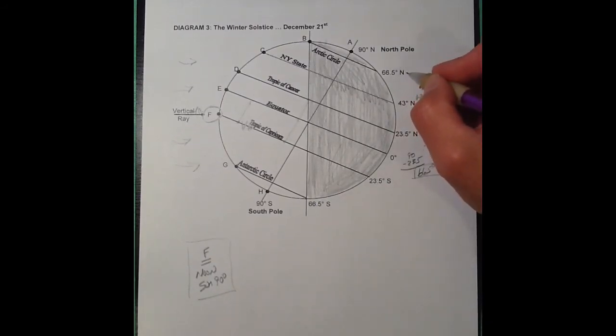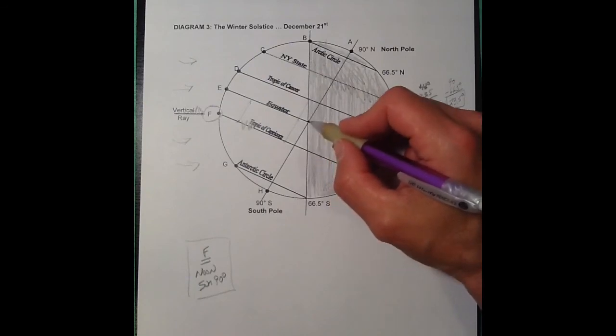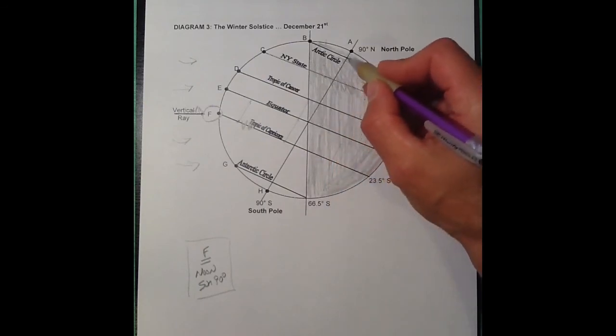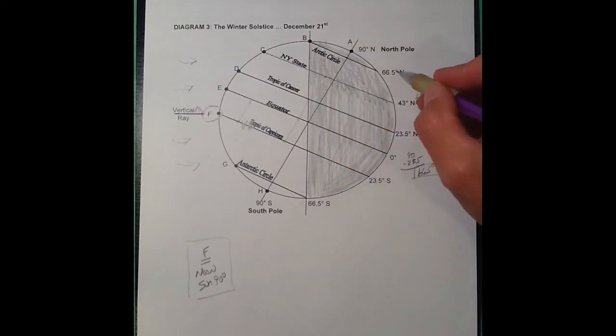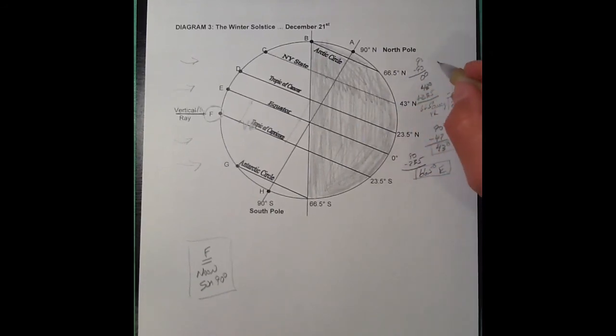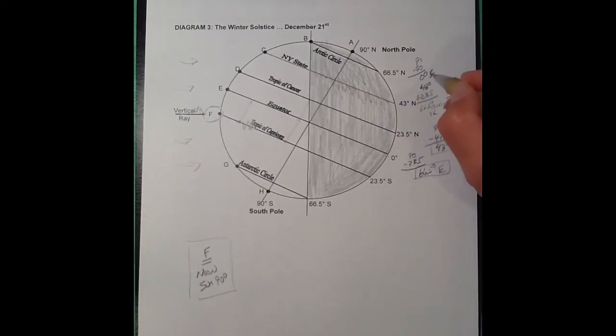The Arctic Circle, 23.5 degrees to reach the equator, 66.5 to get up to the Arctic Circle. I add them and I get 90, so I get 90 minus 90, and I'd get zero degrees for point B, which is on the Arctic Circle.